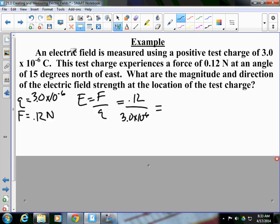We go ahead and do our math, and we figure out that our force field is 4.0 times 10 to the 4th. Now, what is our units going to be for this? What's the unit for force? Newtons. What's the unit for charge? Coulombs. So we're going to have newtons per coulomb. So our electric field strength is 4.0 times 10 to the 4th newtons per coulomb.